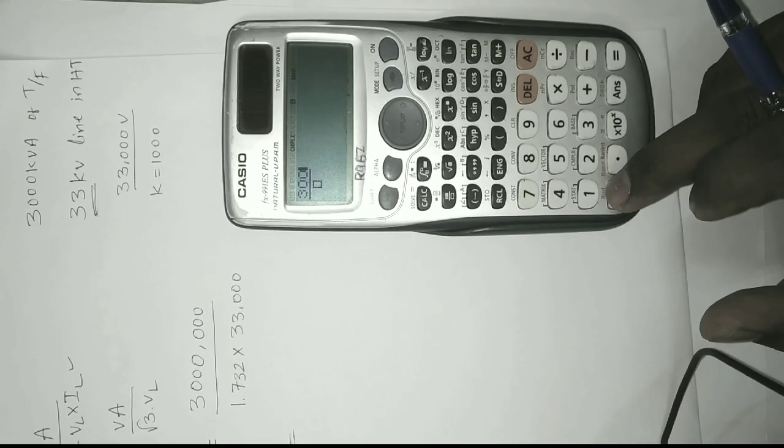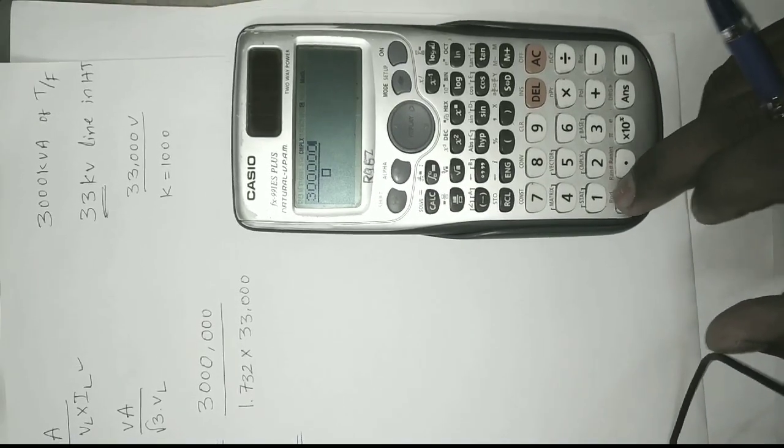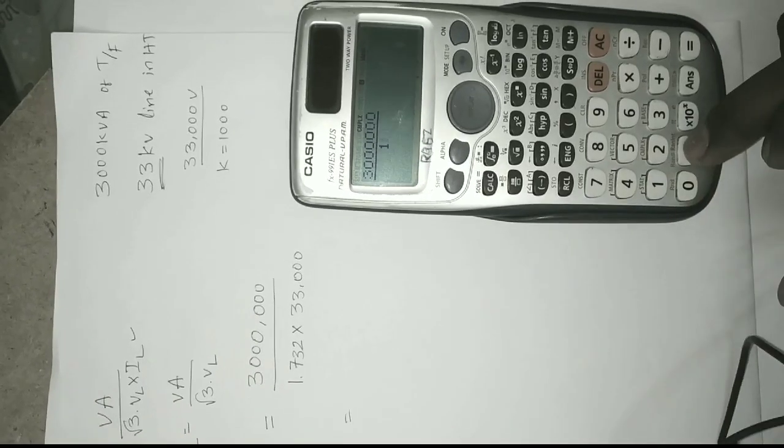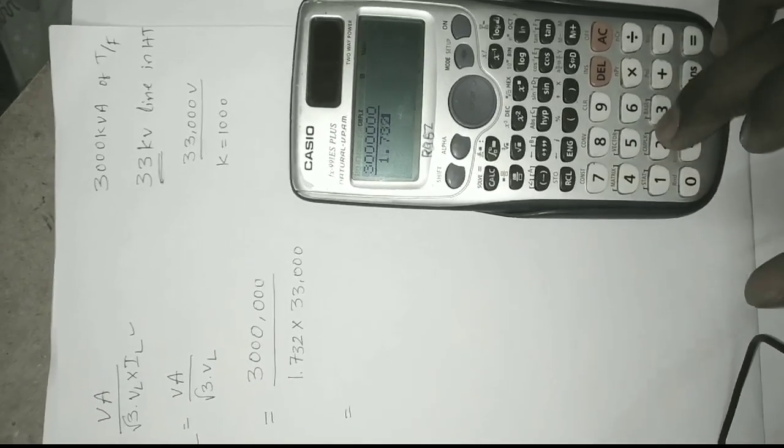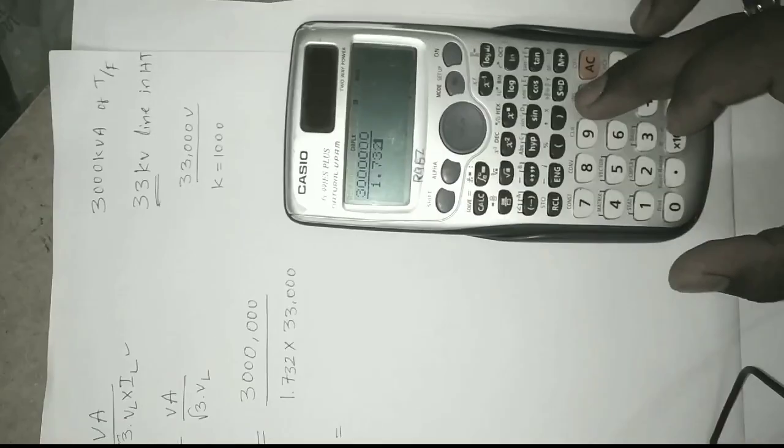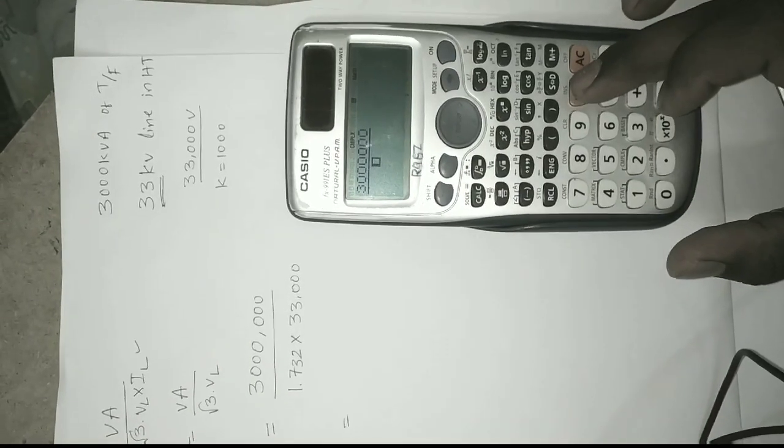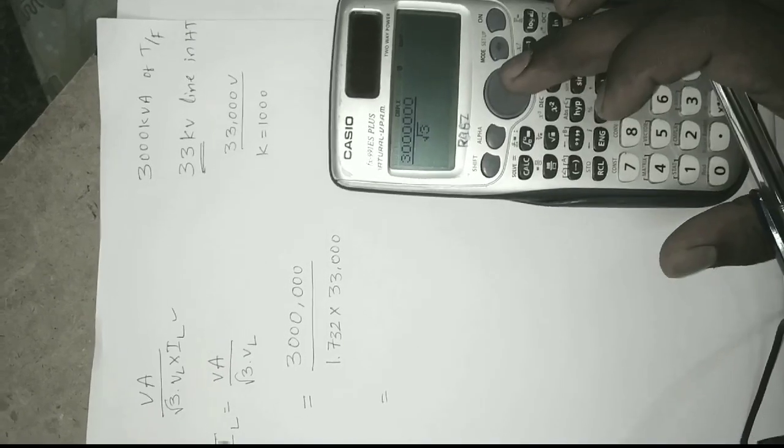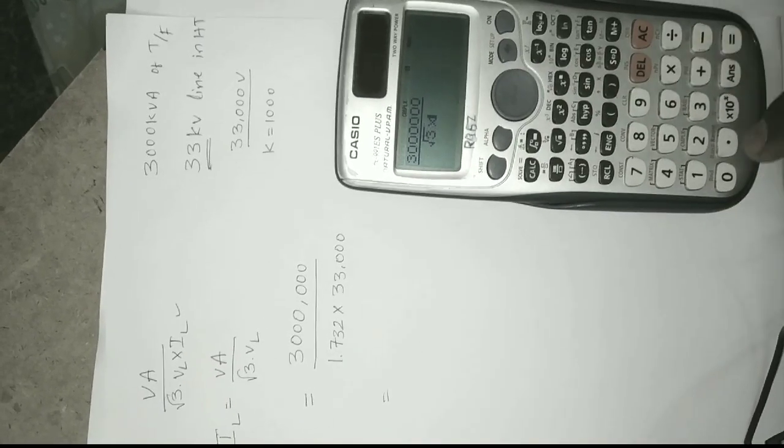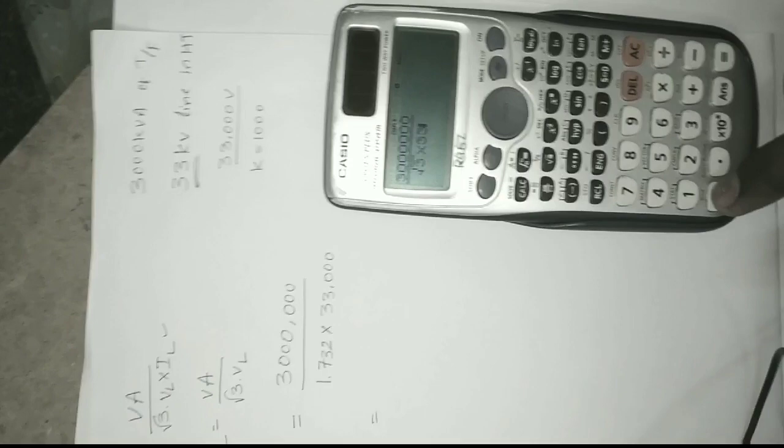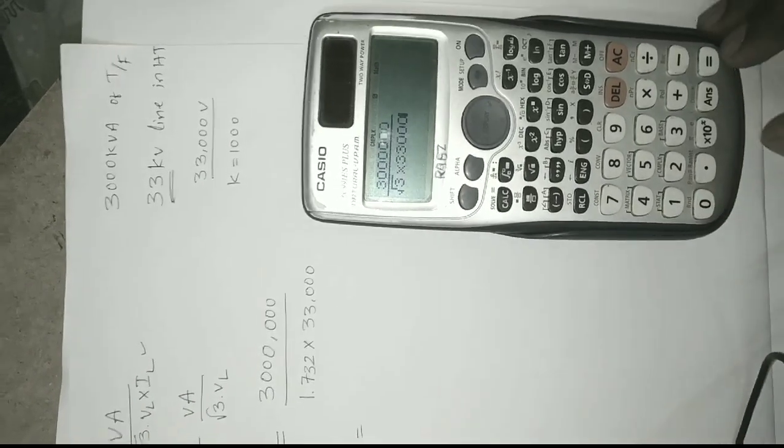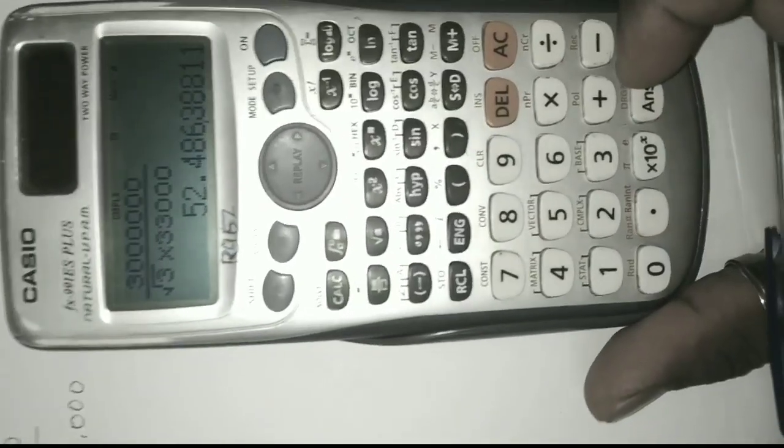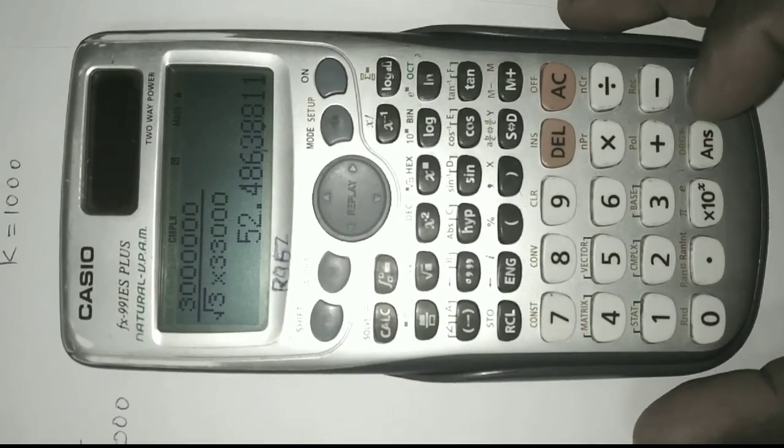3,000,000 by 1.732, okay, just add the root of 3. 3,000,000 into 33,000, answer is 52.486.